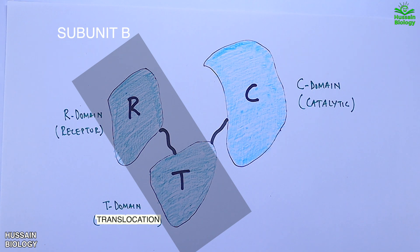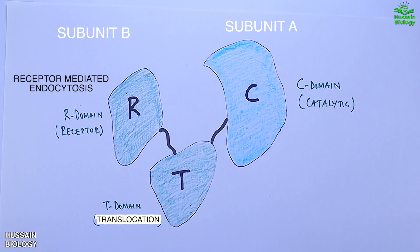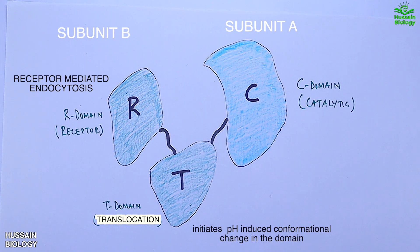The C domain is subunit A of the toxin. The R domain mediates receptor-mediated endocytosis of the toxin. The T domain initiates a pH-induced conformational change, which triggers insertion of the domain into the endosome structure, thereby helping in translocation.